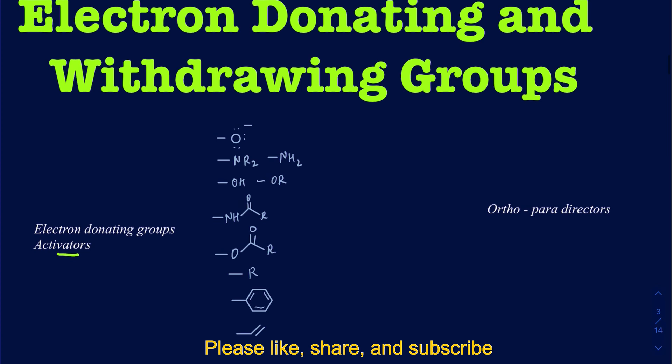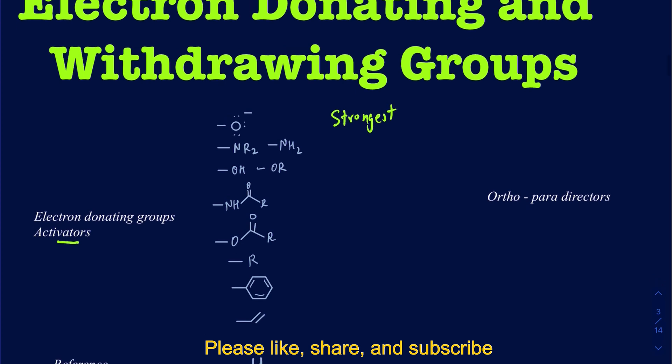You want to make sure you know what groups fall in the category of electron donating groups and what groups are electron withdrawing groups. Even among electron donating groups, some are going to be stronger — those are called strong activators — and some are going to be weak electron donating groups, or weak activators. I have placed these groups in order of decreasing electron-donating strength. On the top is your strongest electron donating group, and on the bottom is the weakest.